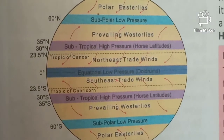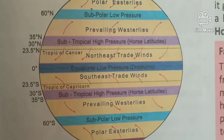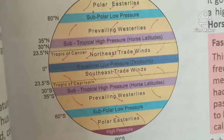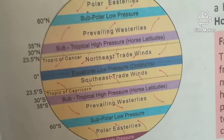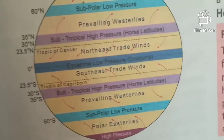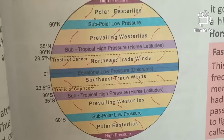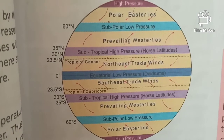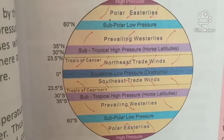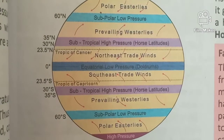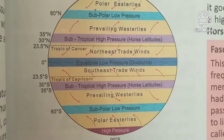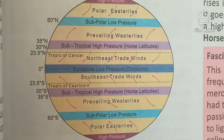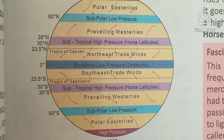There is a pattern of alternate high and low pressure belts over the earth, due to the spherical shape of the earth. In the diagram showing pressure belts, you can see the equatorial low pressure belt in the middle. Moving north, the subtropical high pressure belt is from 30° to 35°N, and to the south from 30° to 35°S. The subpolar low pressure belt is at 60°N, and similarly at 60°S.